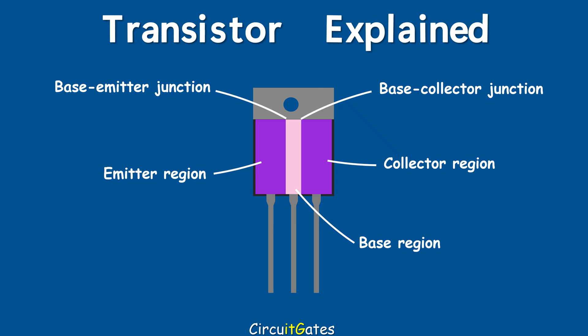The lead connected to the base is labeled B, the lead connected to the collector is labeled C, and the lead connected to the emitter is labeled E. The three regions of a BJT transistor differ in doping level and size according to their intended functions. The emitter region is heavily doped, the collector region is moderately doped, and the base region is thin and lightly doped.